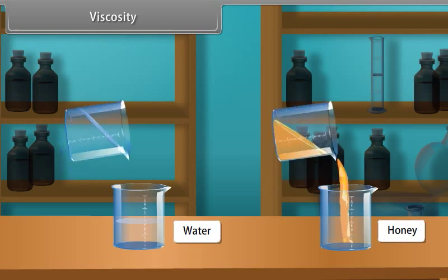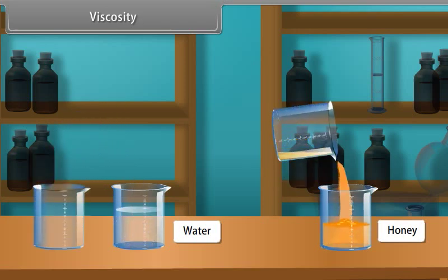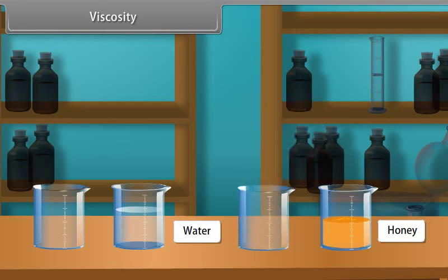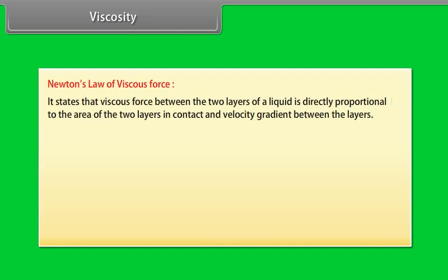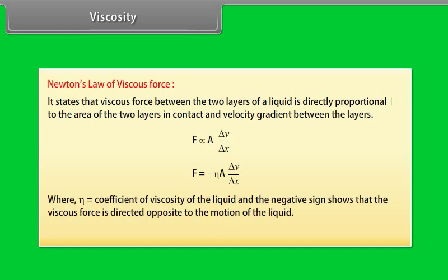Viscosity. It is defined as the property of a liquid by virtue of which an internal resistance comes into play which tries to destroy the relative motion between the layers. This internal resistance acts tangentially on the layers of the liquid. Newton's law of viscous force states that viscous force between two layers of a liquid is directly proportional to the area of the two layers in contact and velocity gradient between the layers. F is directly proportional to A times delta V over delta X. This equation can be written as F equals minus eta A times delta V over delta X, where eta is the coefficient of viscosity of the liquid and the negative sign shows that the viscous force is directed opposite to the motion of the liquid. Its dimensional formula is ML to the power minus 1 T to the power minus 1.